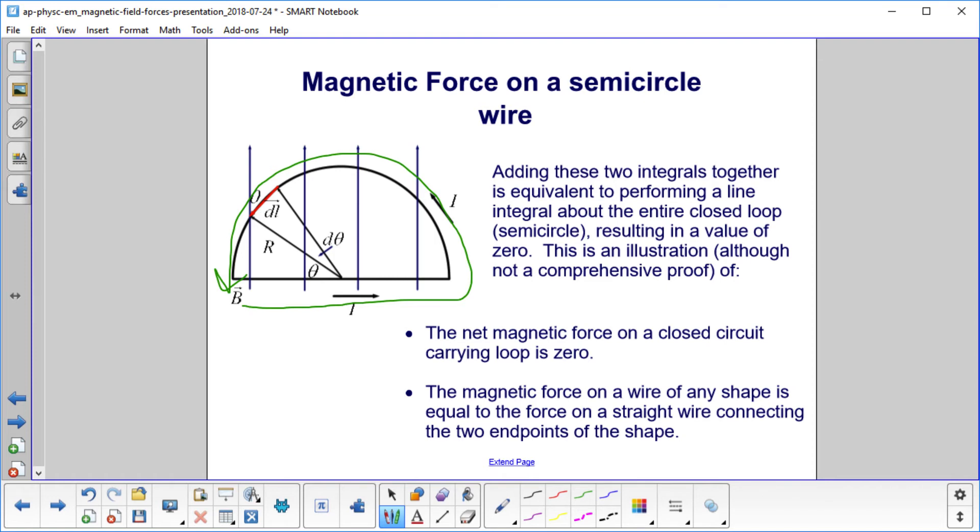The net magnetic force on a closed circuit carrying loop is zero. The magnetic force on a wire of any shape, for example, this semicircle piece here, is equal to the force on a straight wire connecting the two endpoints of the shape. So that would be this, right? The force on that guy is equal to the force on this guy.